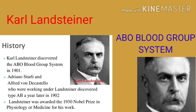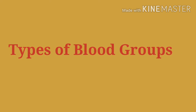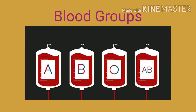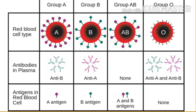For this discovery he was awarded the Nobel Prize in Physiology or Medicine in 1930. Blood is a mixture of plasma and blood cells, which include red blood cells, white blood cells, and blood platelets. The generally recognized blood groups are A, B, O, and AB. A person with blood group A has antigen A on the surface of RBCs and antibody B in the plasma. A person with blood group B has antigen B on the surface of RBCs and antibody A in the plasma.